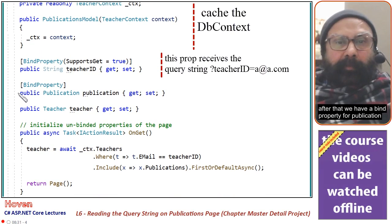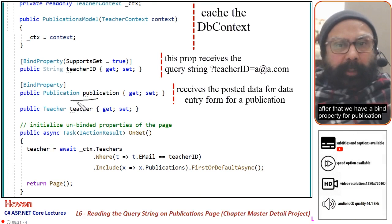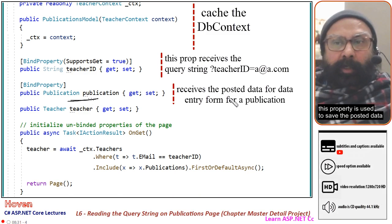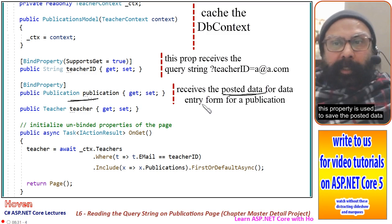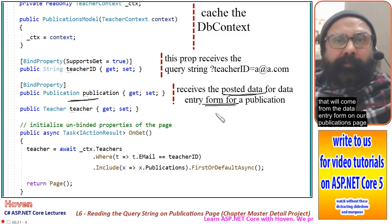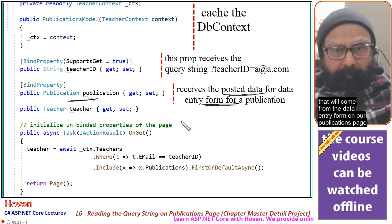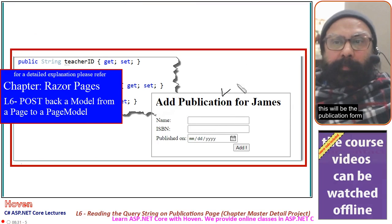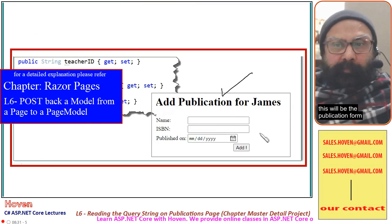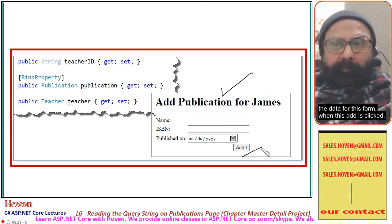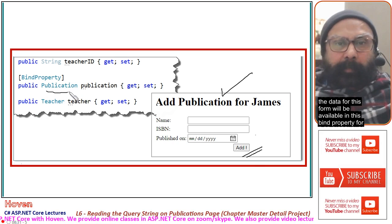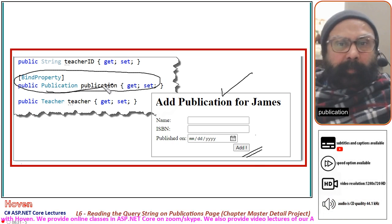After that, we have a BindProperty for Publication. This property is used to save the posted data that will come from the data entry form on our publications page. When the Add button is clicked, the form data will be available in this bind property for Publication.